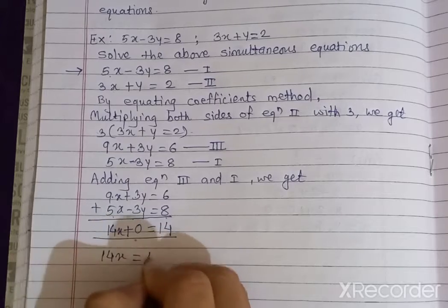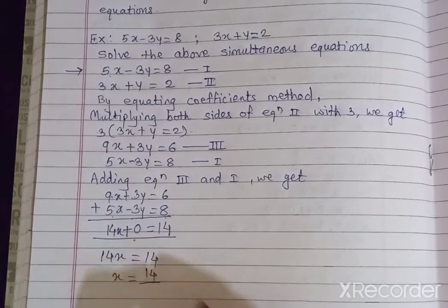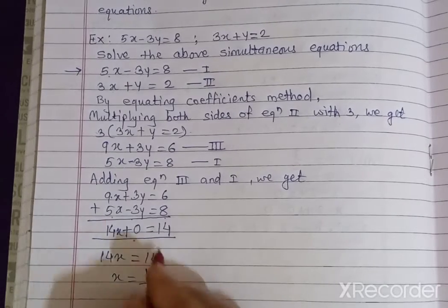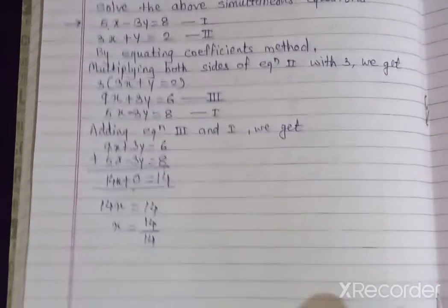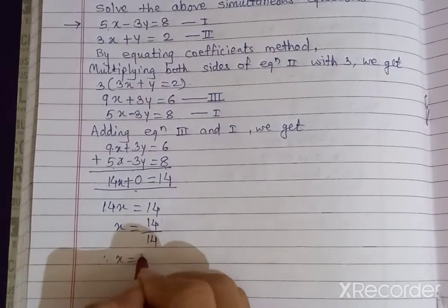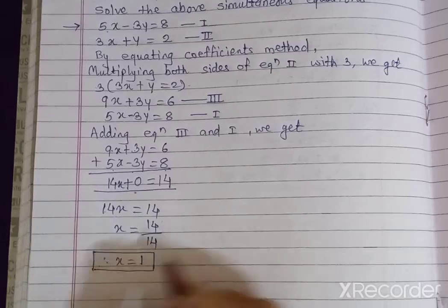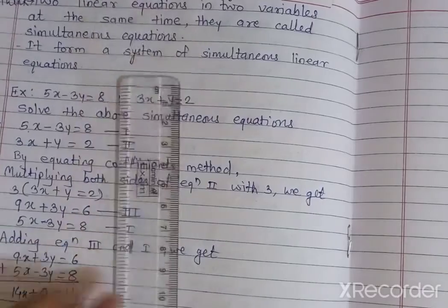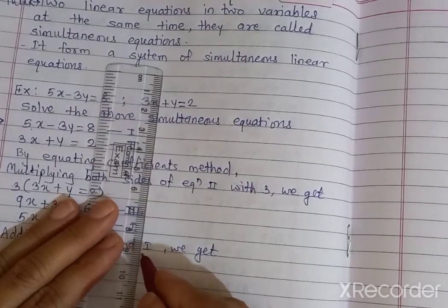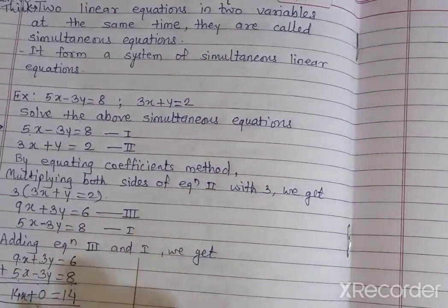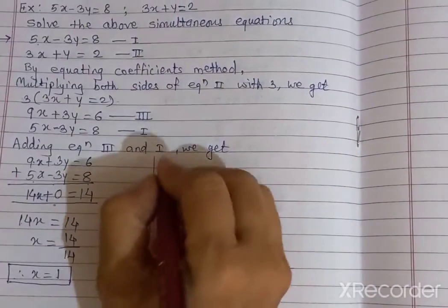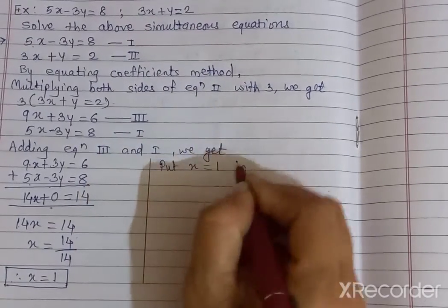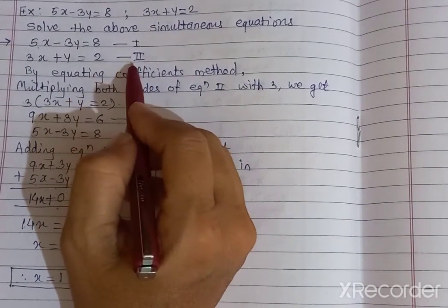So 14x is equal to 14. Therefore the value of x is 14 divided by 14, which equals 1. We get the value of x is 1. Now we are going to substitute this value of x equal to 1 in any one of the equations — equation 1 or equation 2.